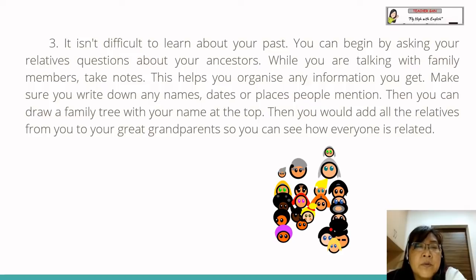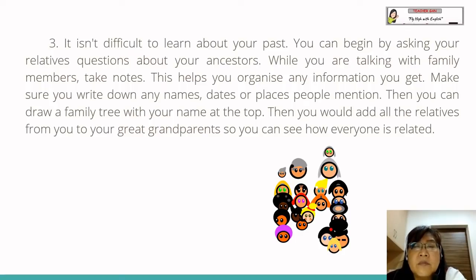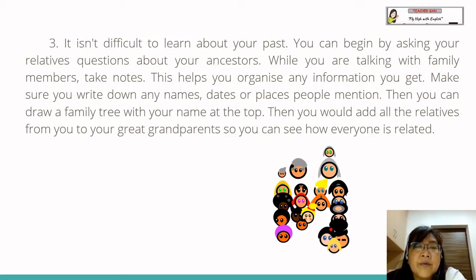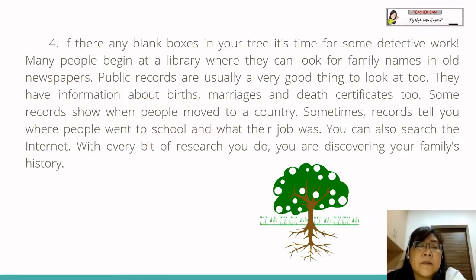Paragraph three: It isn't difficult to learn about your past. You can begin by asking your relatives questions about your ancestors. While you are talking with family members, take notes — this helps you organize any information you get. Make sure you write down any names, dates, or places people mentioned. Then you can draw a family tree with your name at the top, and add all the relatives from you to your great-grandparents, so you can see how everyone is related.